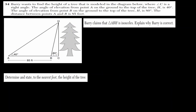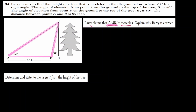In question 34, Barry wants to find the height of a tree. Angle C is a right angle, the angle of elevation from point A to the top is 40 degrees, the angle of elevation from point B is 80 degrees, and the distance from A to B is 85 feet. Barry first claims that triangle ABH is isosceles. To show this, we can show either two congruent sides or two congruent angles.